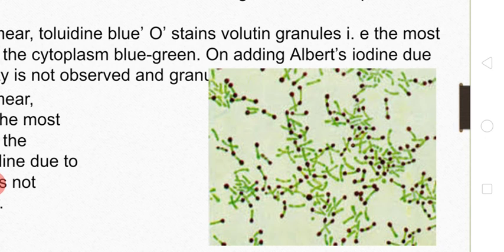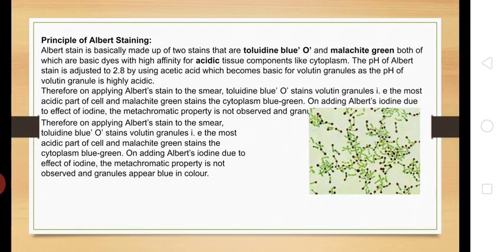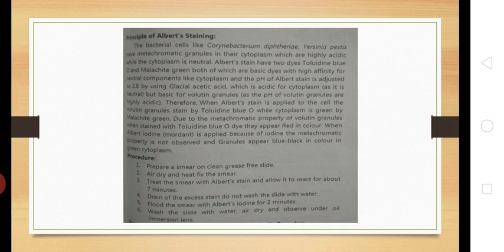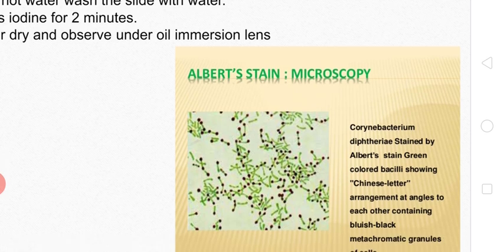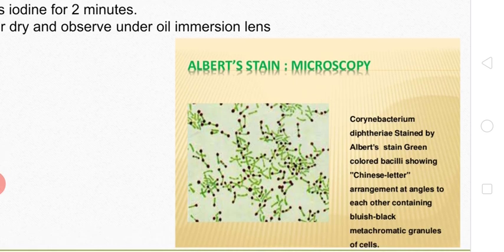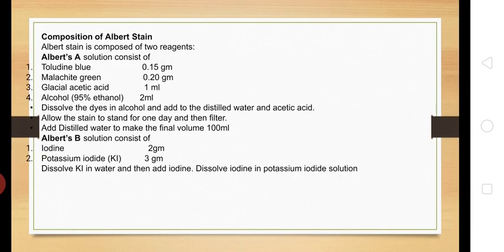The results will show metachromatic granules appearing dark blue or bluish-black, stained by toluidine blue, while the cytoplasm will appear green due to malachite green. This is how we observe the metachromatic granules in bluish-black color, which are stained by using the Albert staining method.